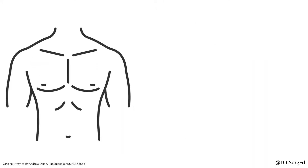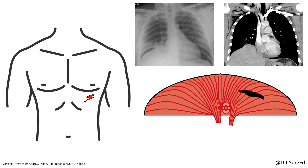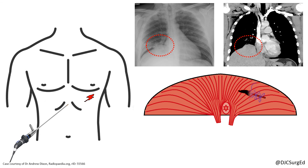A high level of suspicion for diaphragmatic injuries is needed in thoracoabdominal trauma, particularly penetrating trauma between the nipple line superiorly and the costal margin inferiorly. Radiographic imaging can miss injuries in up to 30% of patients, and injuries should be suspected with findings such as an elevated hemidiaphragm or herniation of intra-abdominal contents. The gold standard for diagnosis and treatment is laparoscopy or inspection at the time of laparotomy. Preferred treatment is transabdominally within one week, or thoracoscopically if delayed.